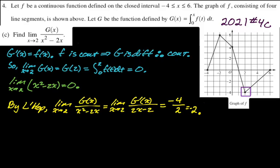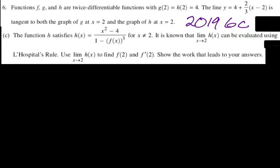Again, to keep repeating the key idea: if you know the function, just find the limit; if you only know about the function, you have to justify the limit. The next example is from 2019 — number 6C — and it's a more unusual question.